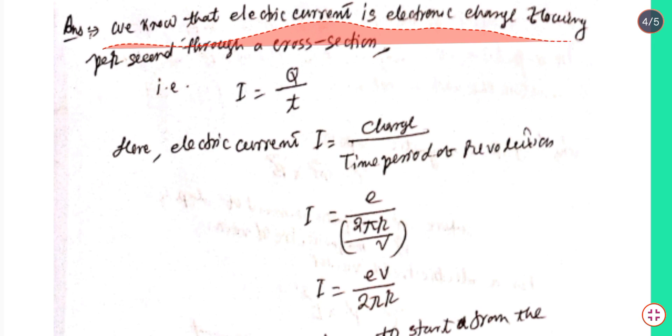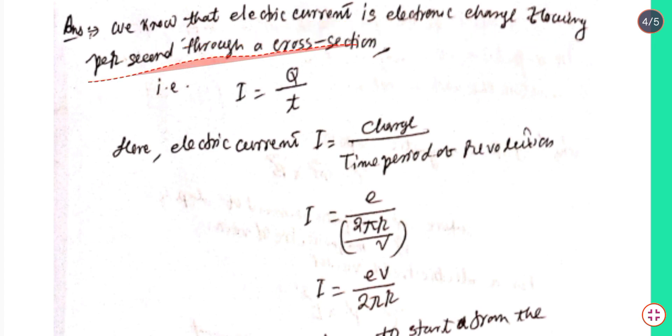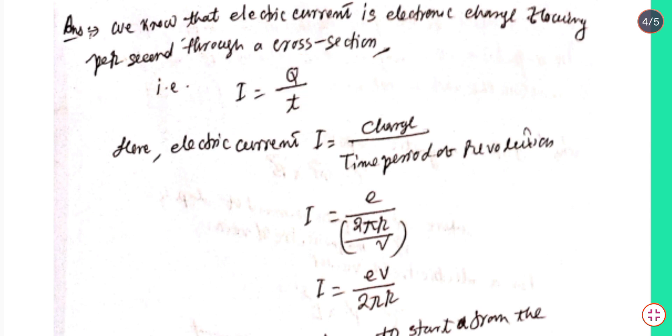We know that electric current is equal to electronic charge flowing per second through a cross section, that is i = q/t, where q = e is the charge and t is the time period of revolution.